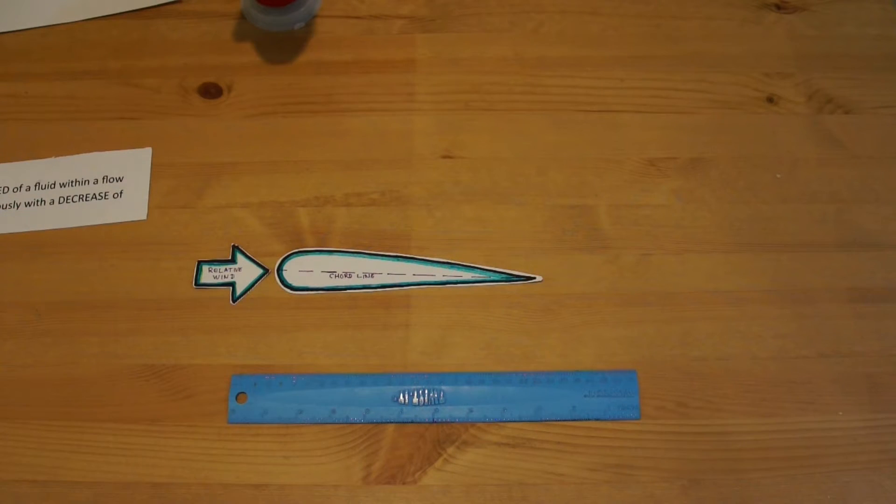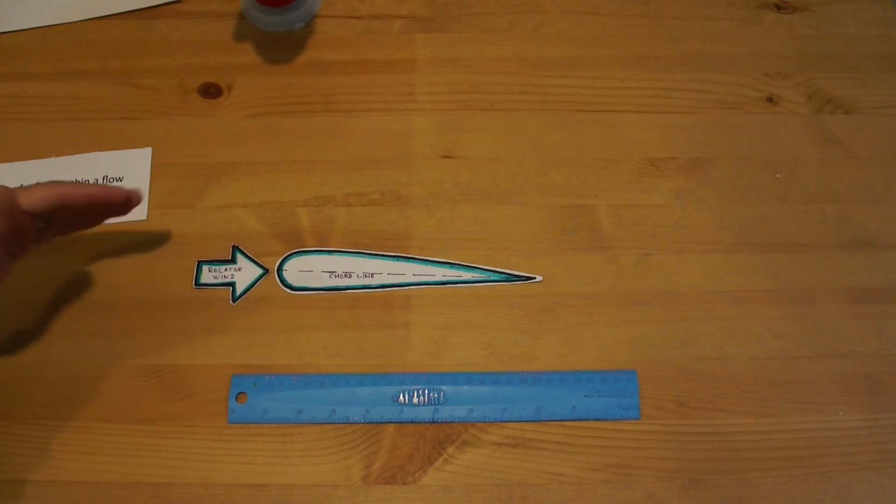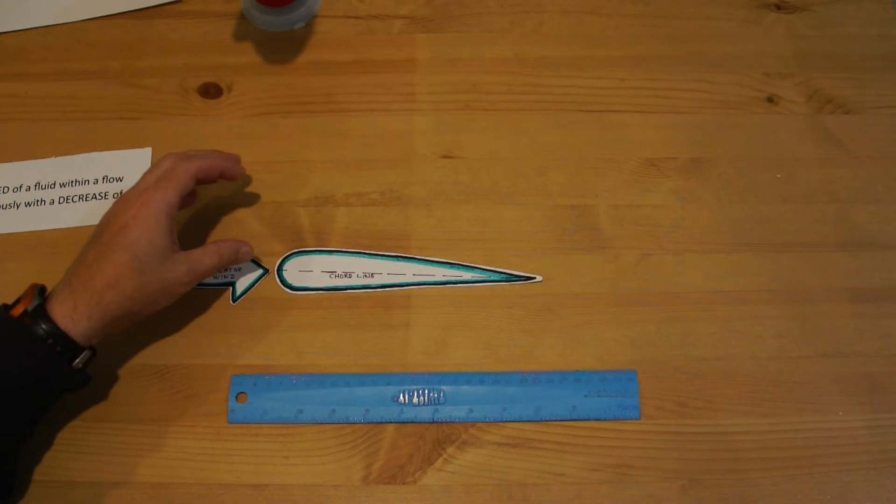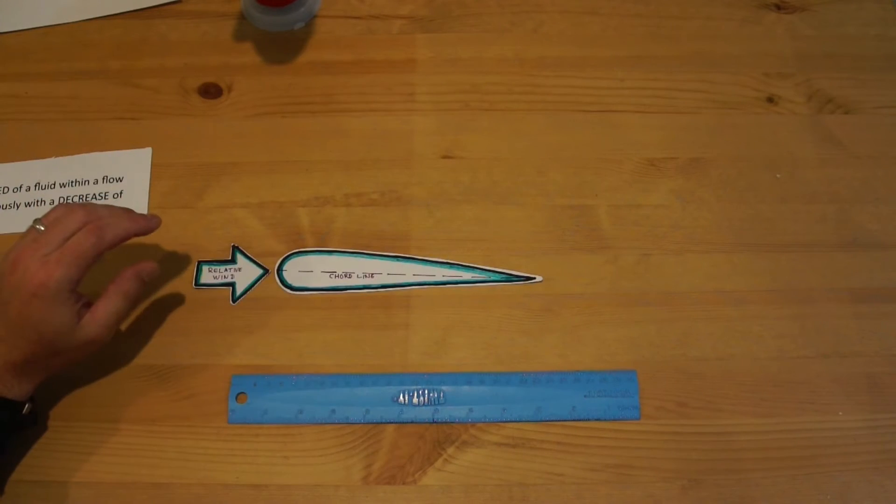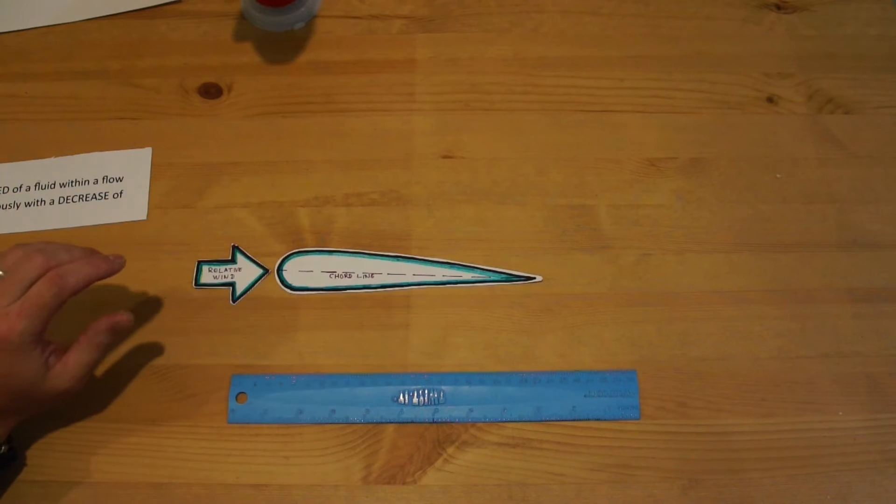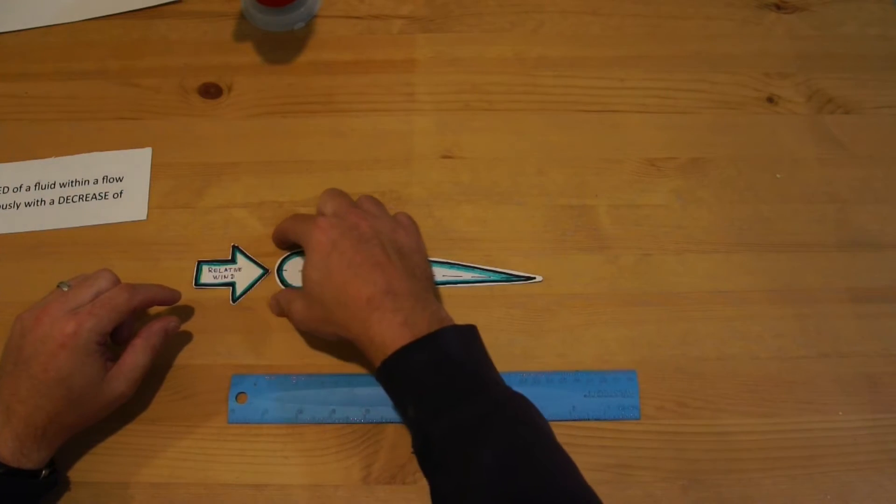We know the straight line is the shortest distance between two points. As this air goes over the top of the wing, the air that flows over the top has to flow faster. There's some debate about why it goes faster, but we do know that that does happen.